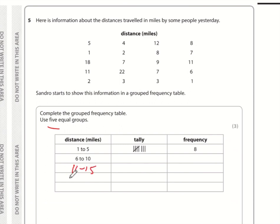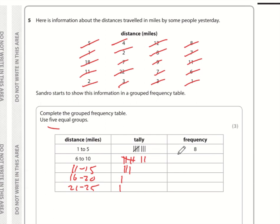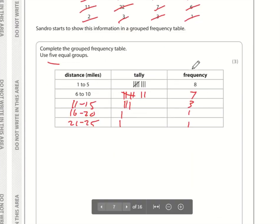Question five: use five equal groups — 1 to 5, 6 to 10, 11 to 15, 16 to 20, 21 to 25. Sorting the data: 12 goes in 11–15, 8 and 7 and 9 go in 6–10, 18 goes in 16–20, two 11s go in 11–15, 22 in 21–25, 6 in 6–10. Tallying up gives 5, 6, 7, 1, 1. Total: 8 plus 7 is 15, plus 5 is 20 — which is 5 times 4. Correct.